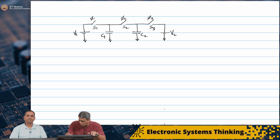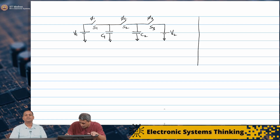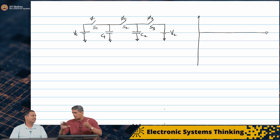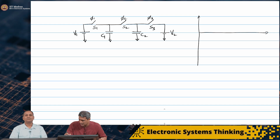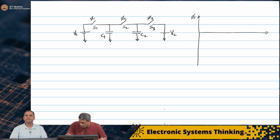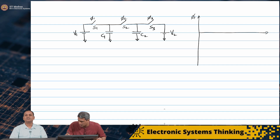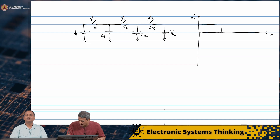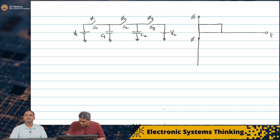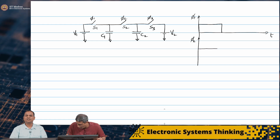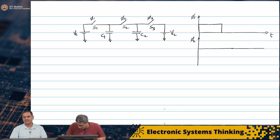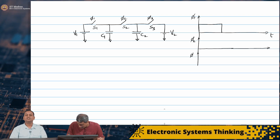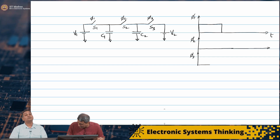In this case I do not have to operate each switch mutually isolated from each other. I can have phi 1 turn on at 0, on for T1. And phi 2 has to be off at this stage — we do not want any interaction between the two capacitors. But phi 3 can be on at the same time as phi 1.